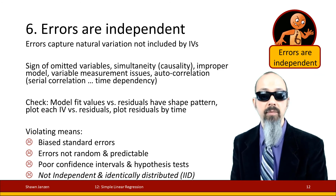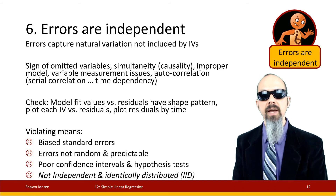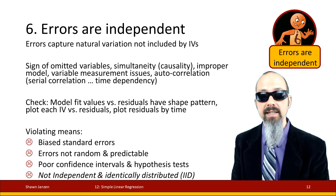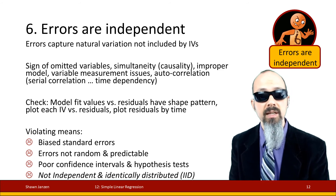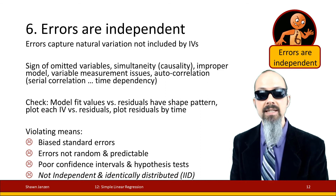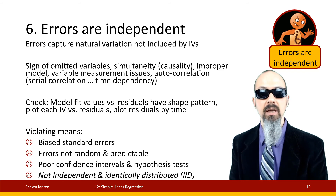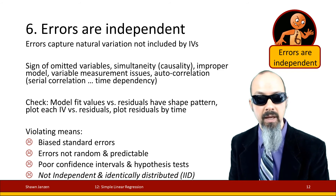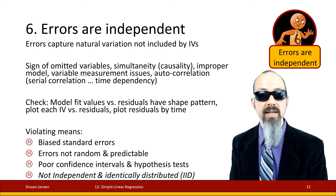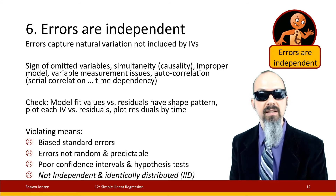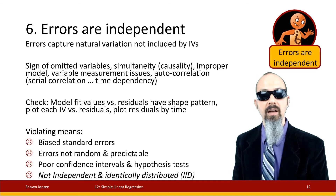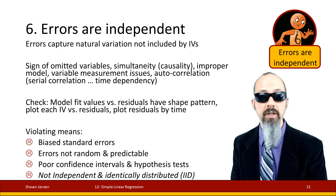Violating error independence also takes away the characteristic of independent and identically distributed errors — IID. IID means our errors are independent and identically distributed; it's a nice badge we get when we pass this assumption and is generally required for linear regression.